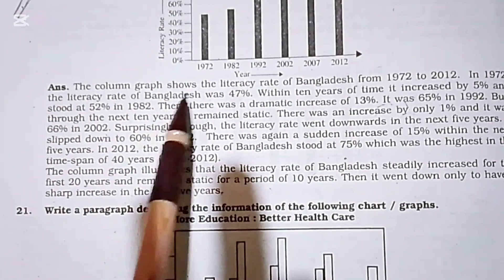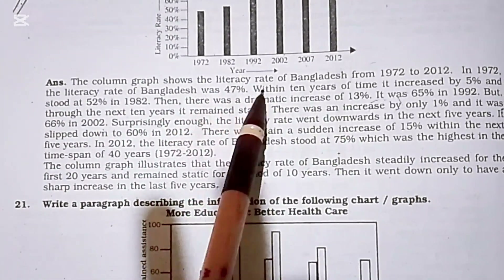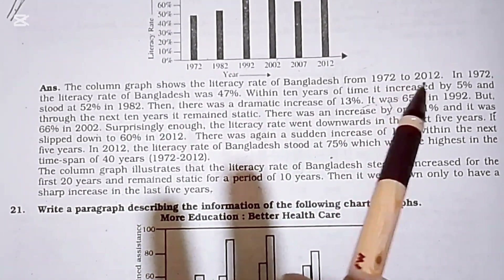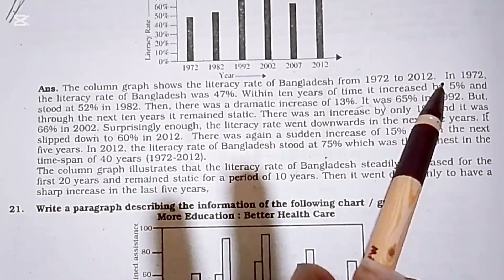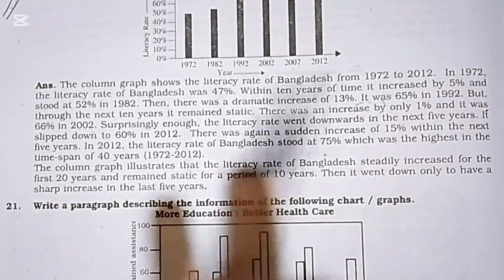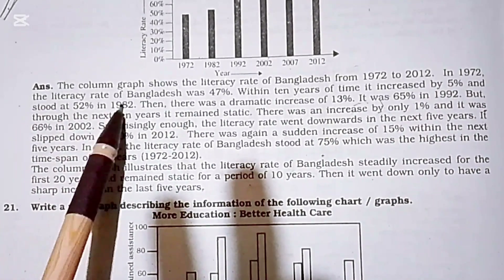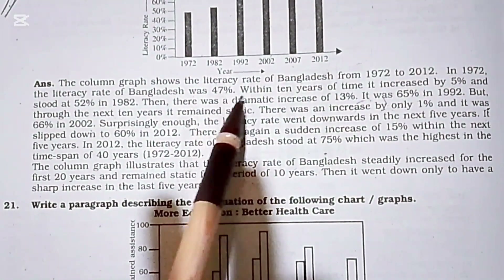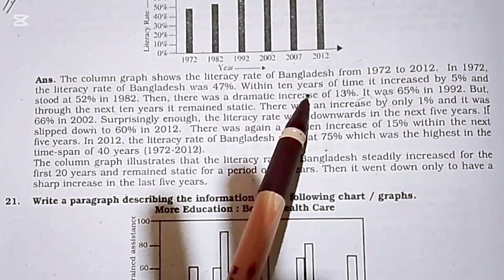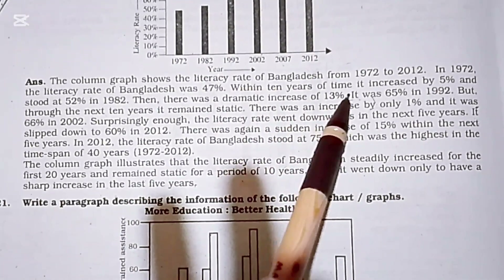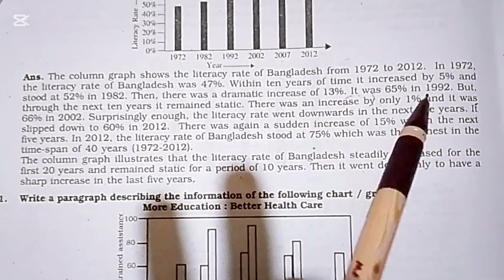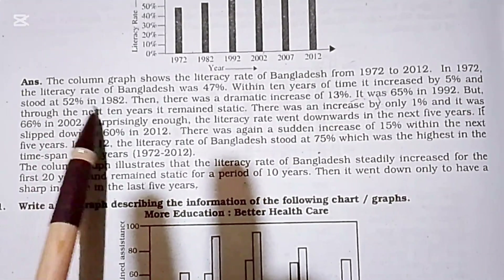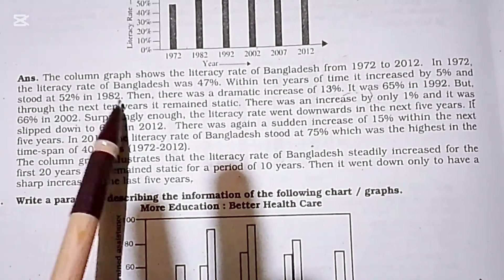The column graph shows the literacy rate of Bangladesh from 1972 to 2012. In 1972, the literacy rate of Bangladesh was 47%. Within 10 years, it increased by 5% and stood at 52% in 1982.